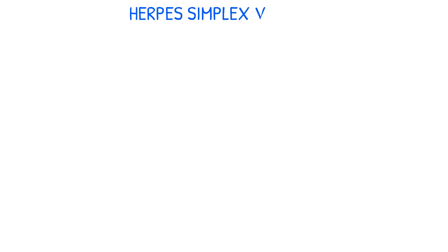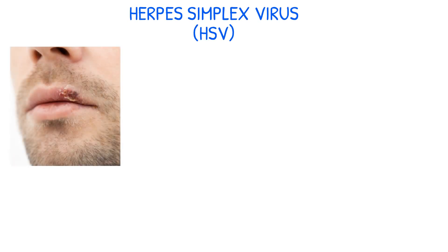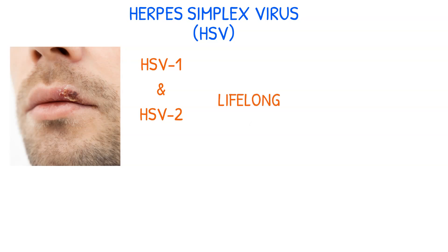Herpes simplex virus, abbreviated HSV, is a common viral infection categorized into two types: HSV-1 and HSV-2. Both types of herpes infections are lifelong and tend to recur.